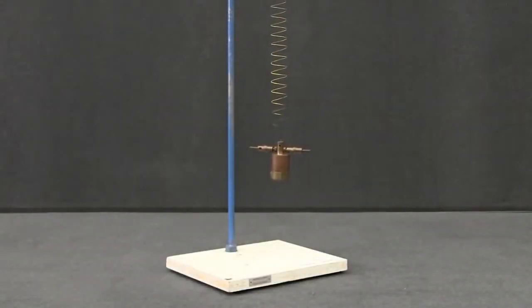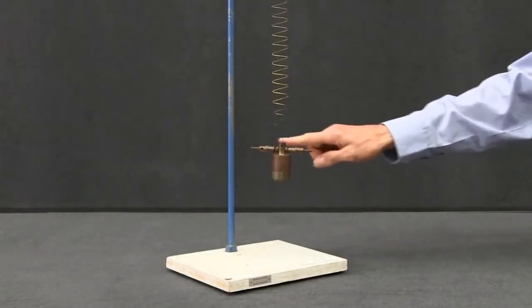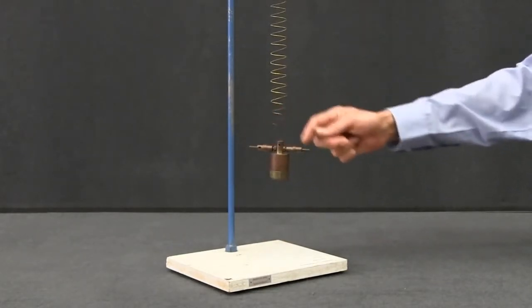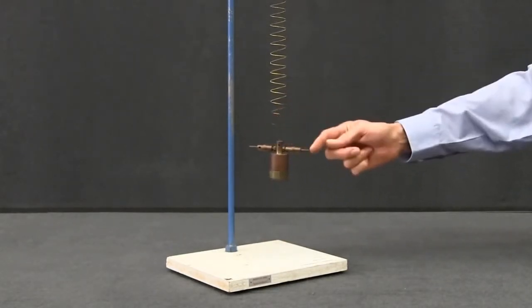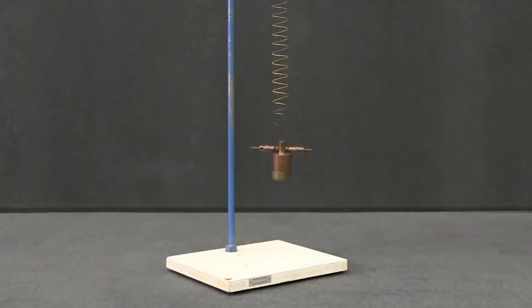Now what we have here is a thing called a Wilberforce pendulum. It has a weight at the bottom, you can see at the top of the weight is a metal rod with weights on either side which are adjustable in position and a long loose spring that's attached to it.